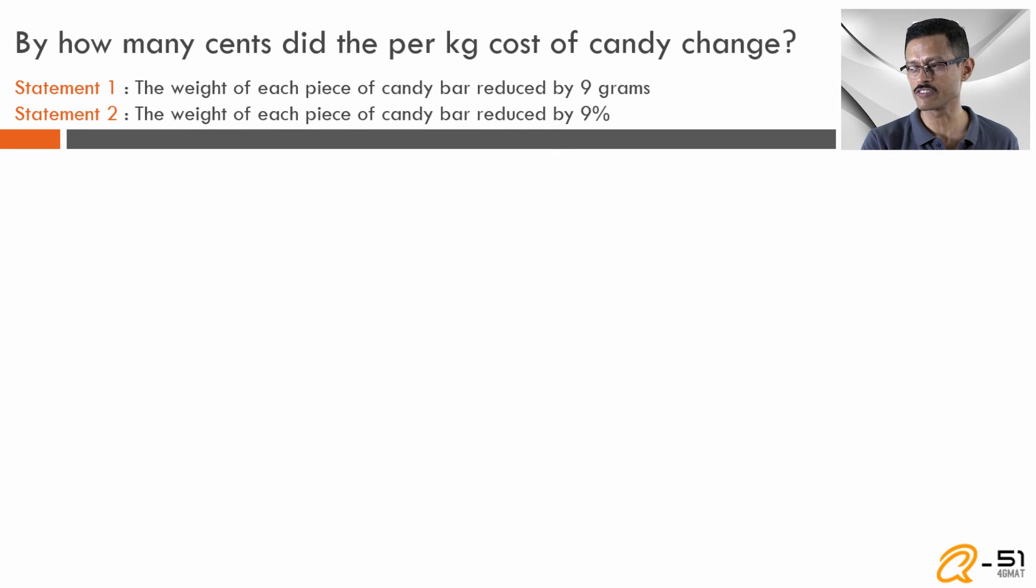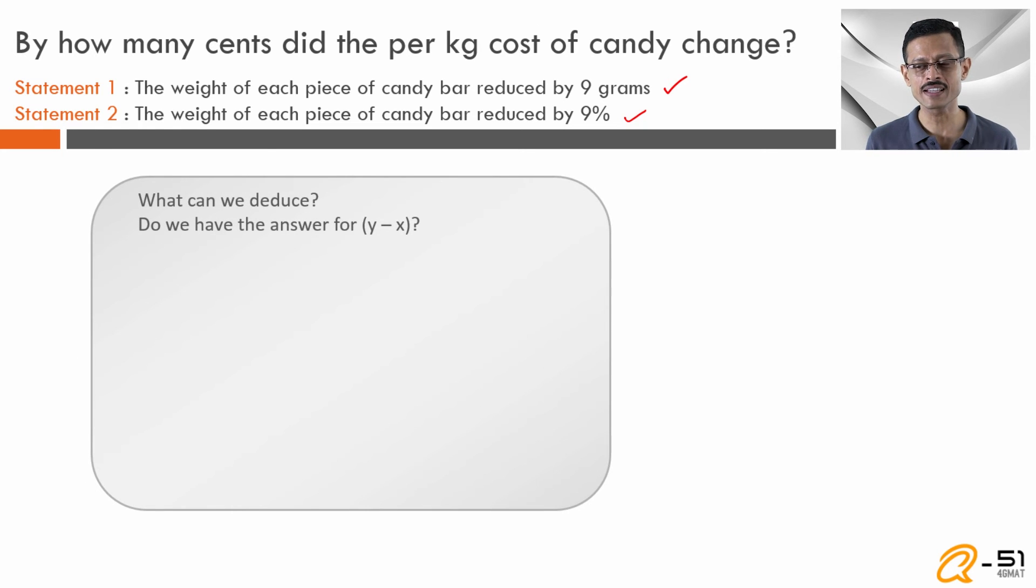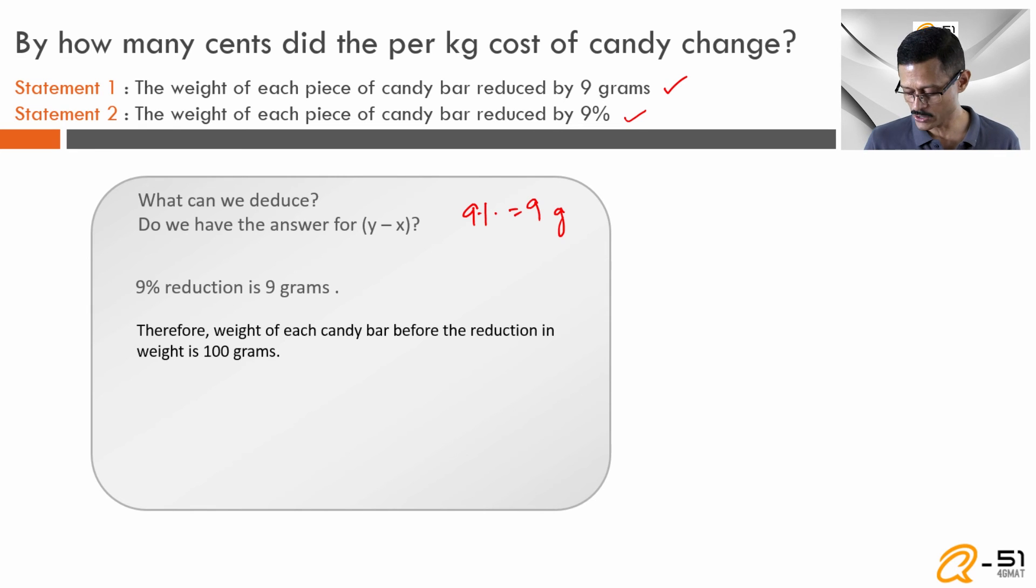Combining, these are the two pieces of information we have: the weight came down by 9 grams and the weight came down by 9%. What can I deduce from this? One thing you can deduce is 9% equals 9 grams. So what can I infer? That the weight of each candy bar was equal to 100 grams. If 9% is 9 grams, 100% is going to be equal to 100 grams. So I know the weight of each candy bar. But do I know the initial cost per kilogram? No. Do I know the initial weight of a candy? No. Do I know the new cost? No. So do I know y minus x? No.